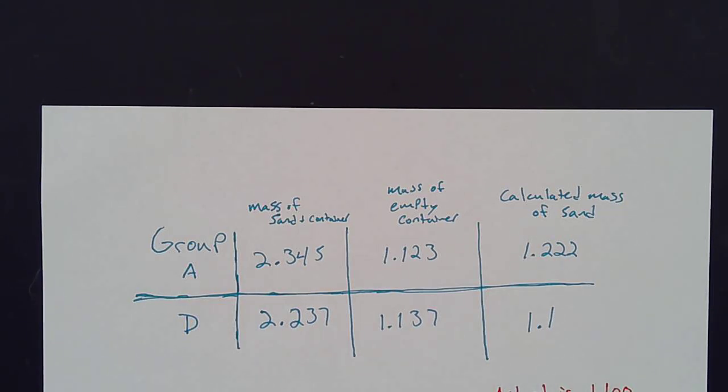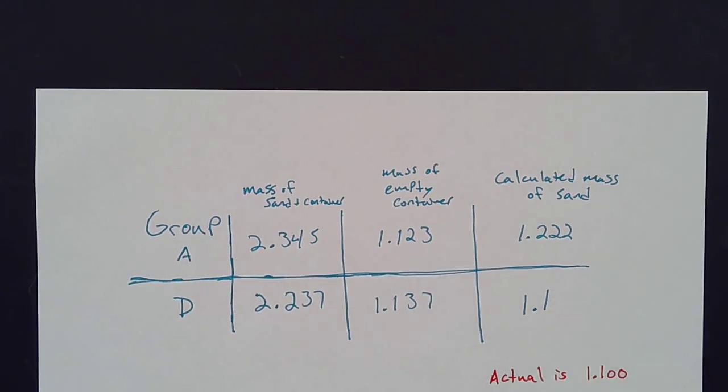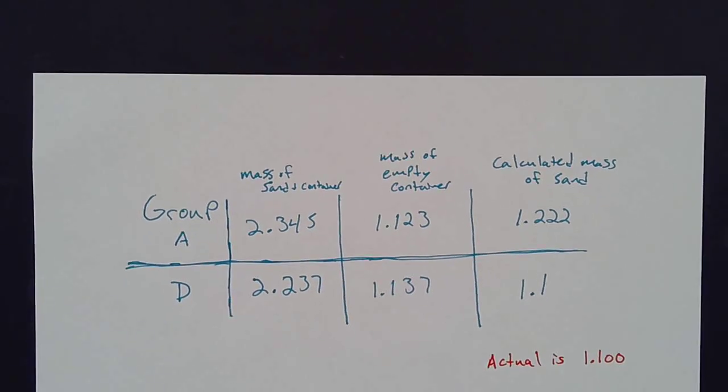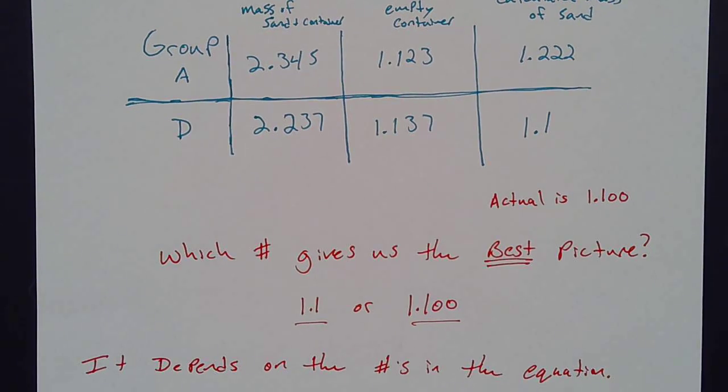Now there's a problem here. The actual for that, if you do this out, is 1.00. Your calculator is only going to tell you 1.1. It's going to round that off for you, because the zeros in a calculator don't mean anything. However, for us, what we really have to do is ask between that 1.1 or that 1.00, which one is giving us the best picture. And truthfully, it's going to depend on the numbers in that equation.